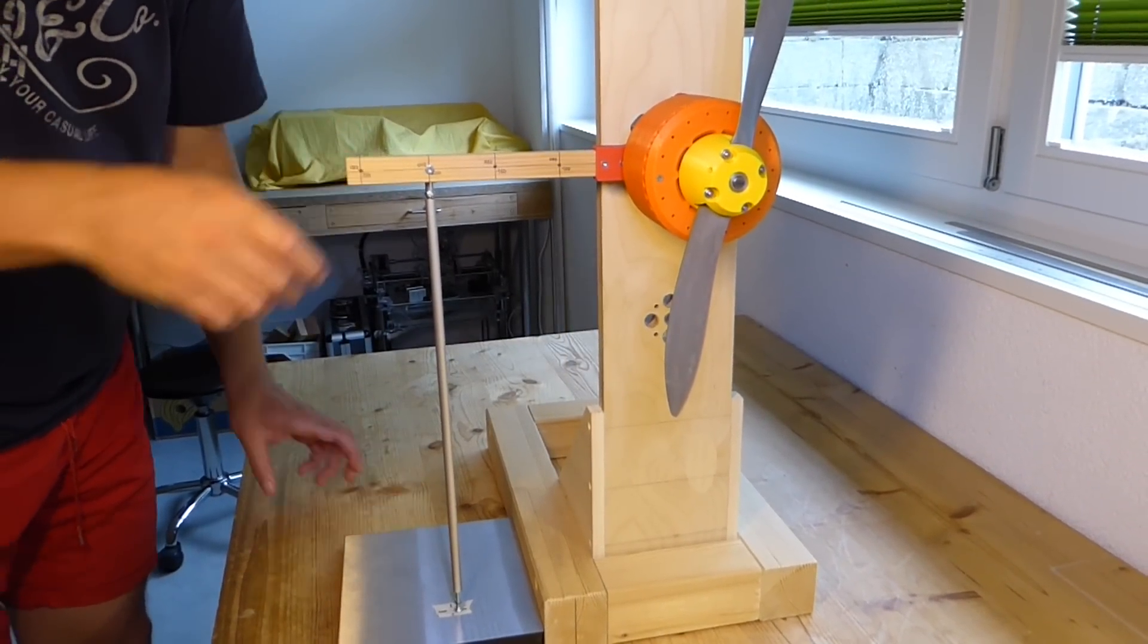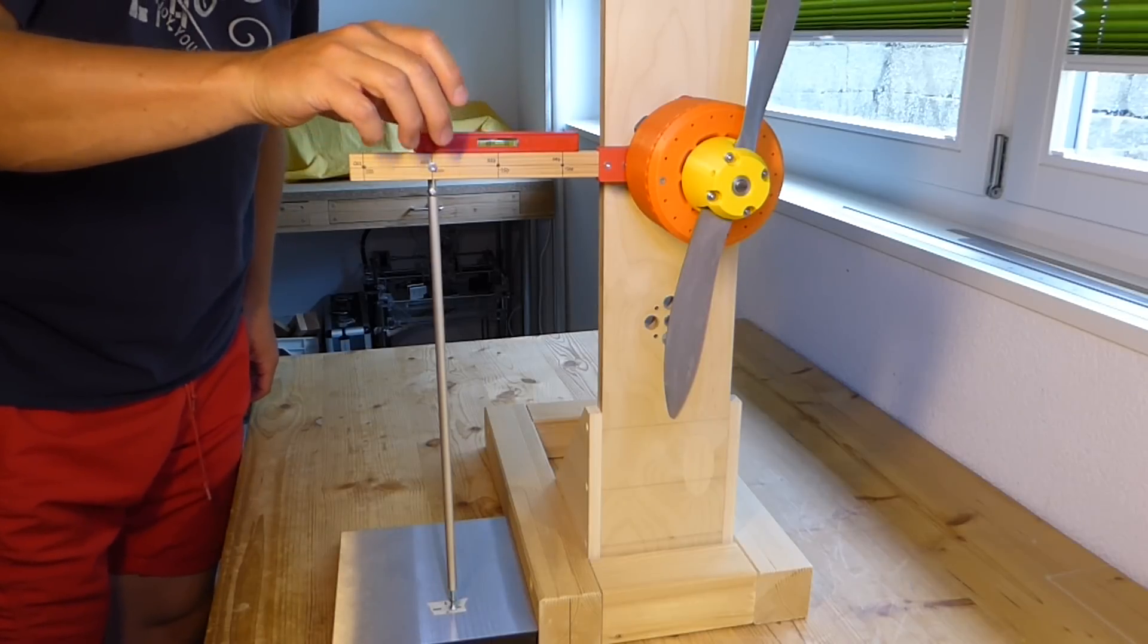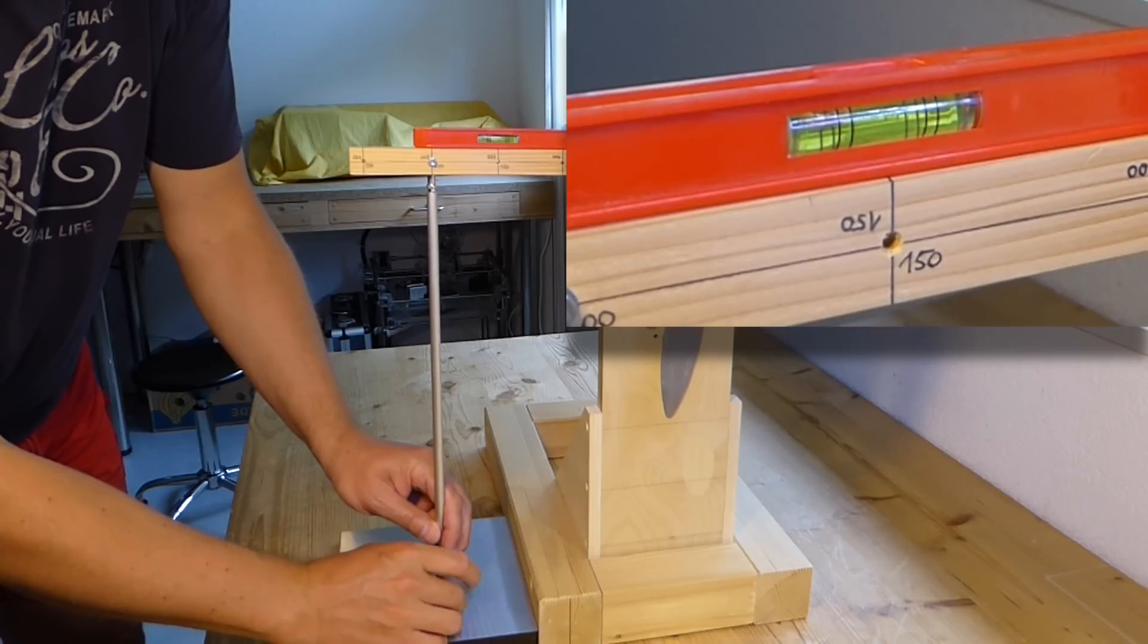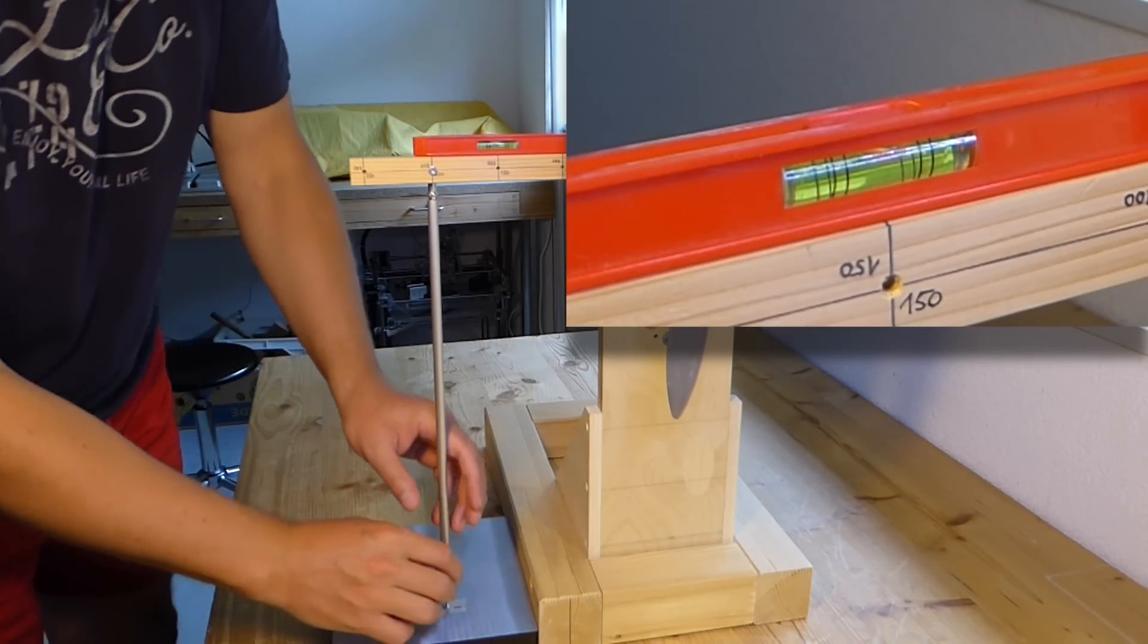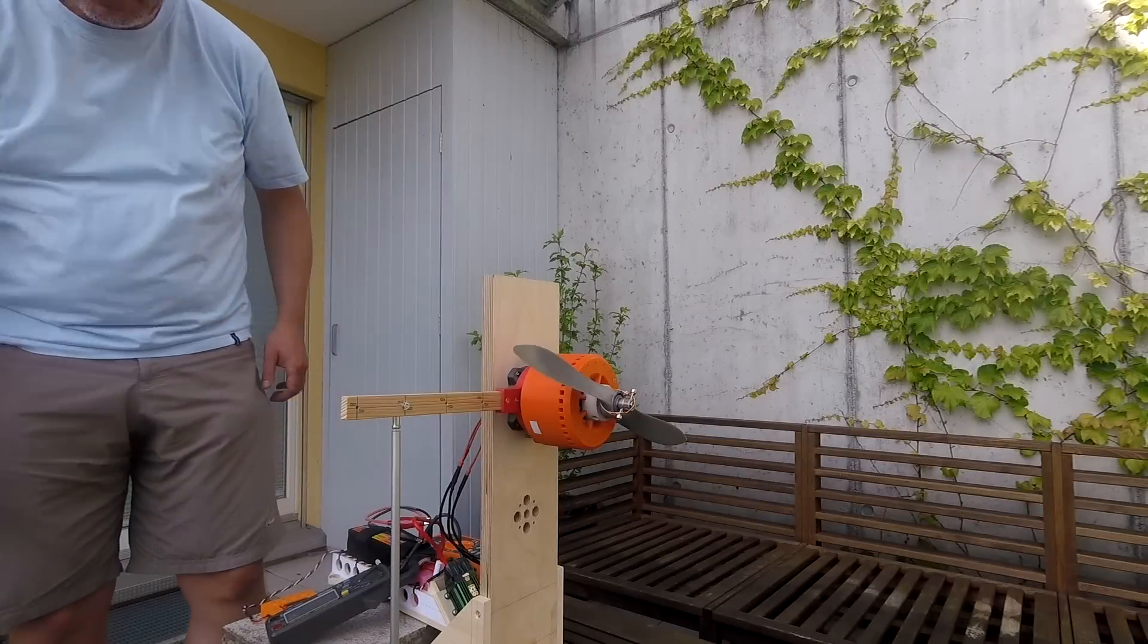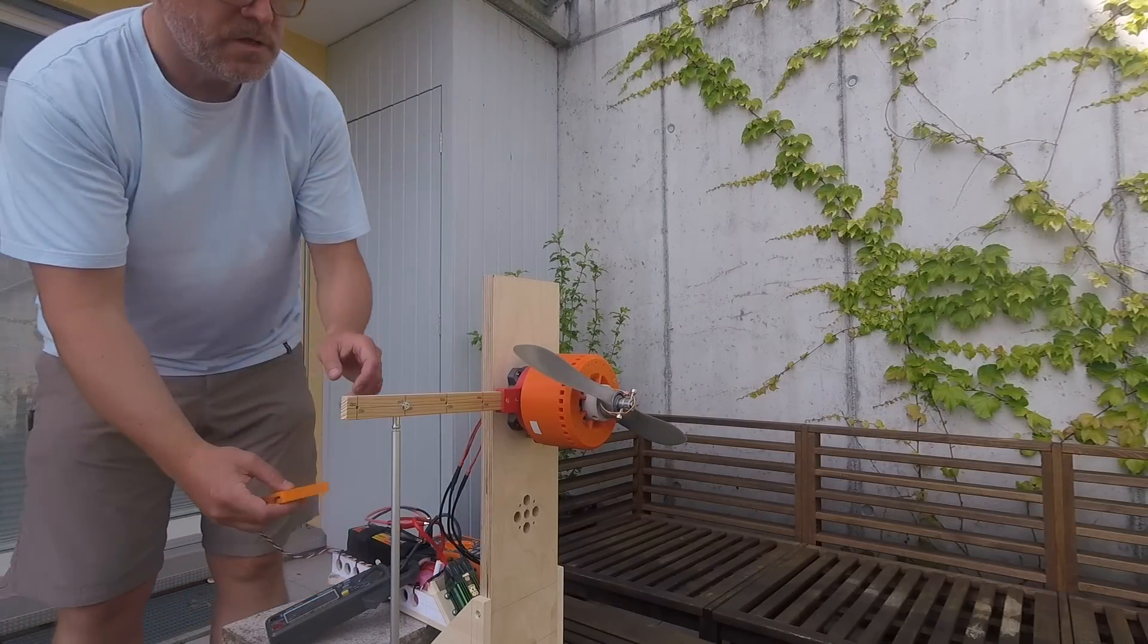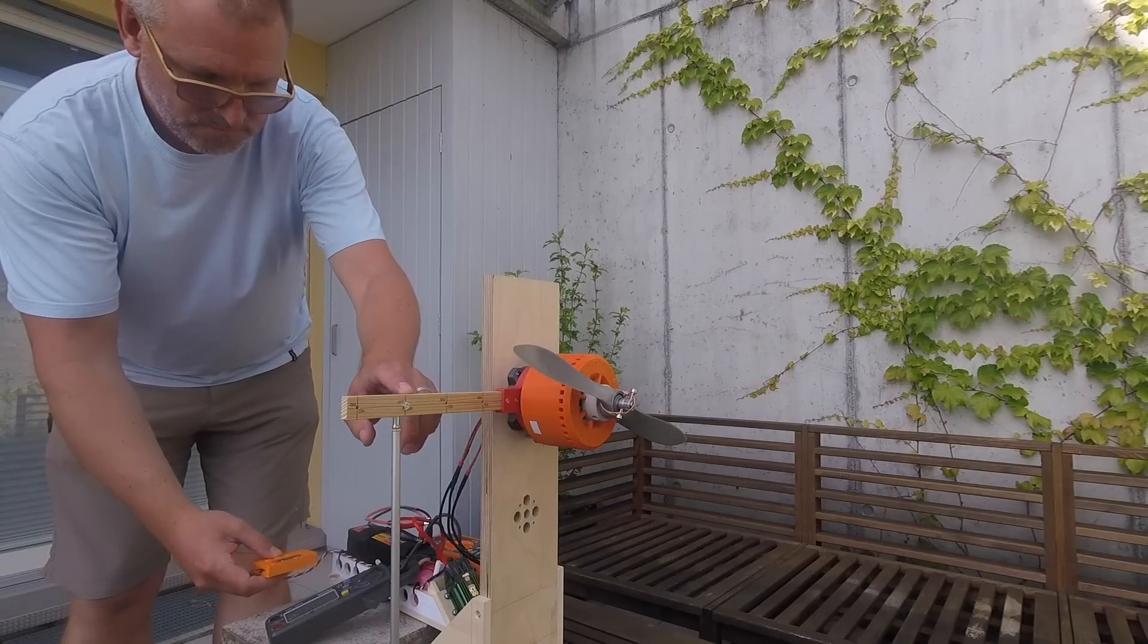The wooden lever is 20 cm long and directly connected with the stator. It needs to be perfectly horizontally aligned. Finally a vertical rod is pushing on the kitchen scales. For executing the efficiency test I am moving outdoor. While the motor is not yet spinning the scale is tarred with the weight of the lever and the rod.